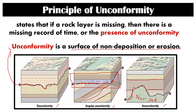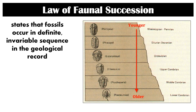The last type is disconformity. With disconformity, an unconformity exists between rock layers that are parallel to each other — the layers above and below are parallel, with the unconformity in between them. The last principle used in relative dating is the law of faunal succession, which states that fossils occur in a definite, invariable sequence in the geological record, and they can be used to identify the relative age of rocks.